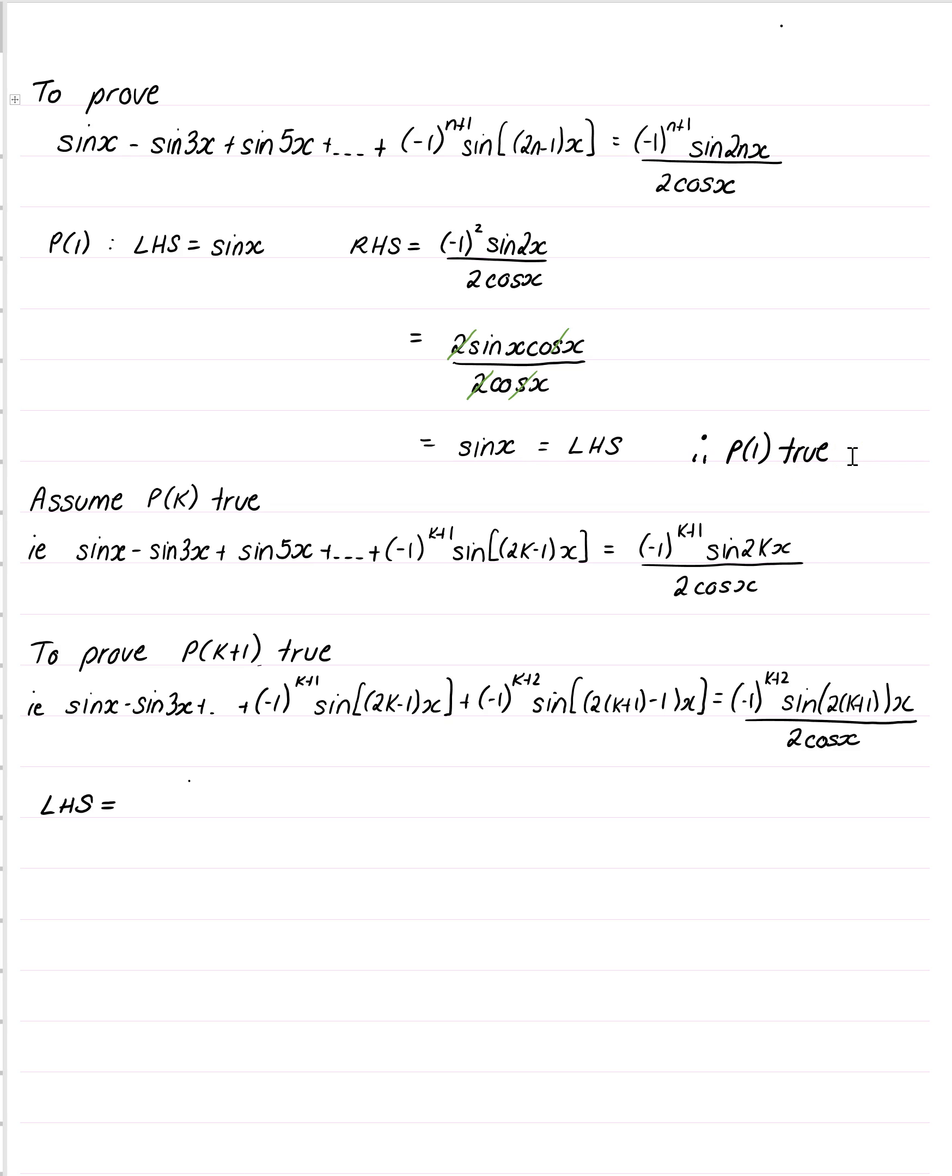We now assume that P of k is true, or let it be true, and that means wherever n is replaced with k, so we get this. You can check, and the idea is that by assuming that this is true, if we can prove the next term,